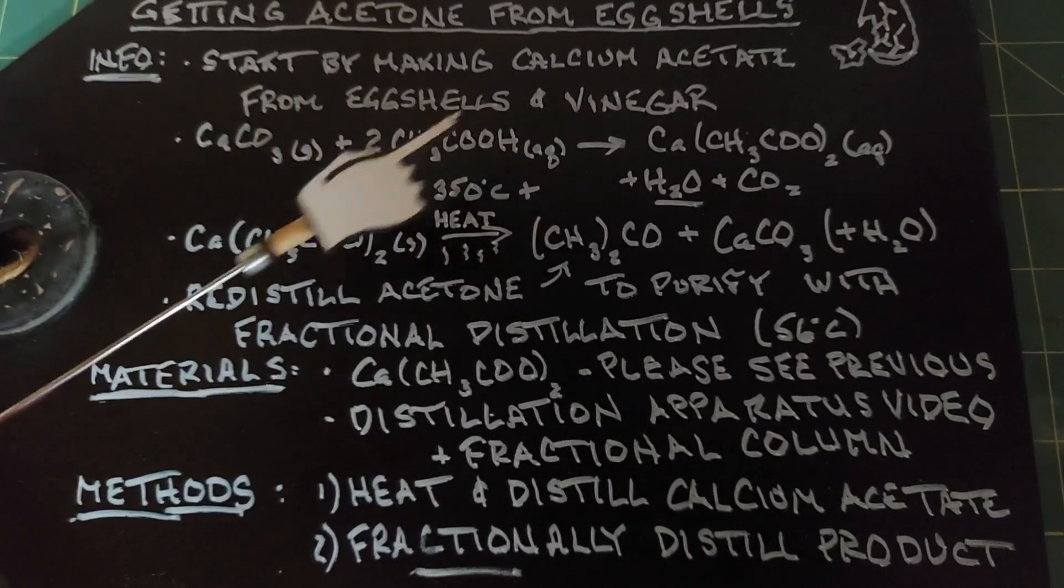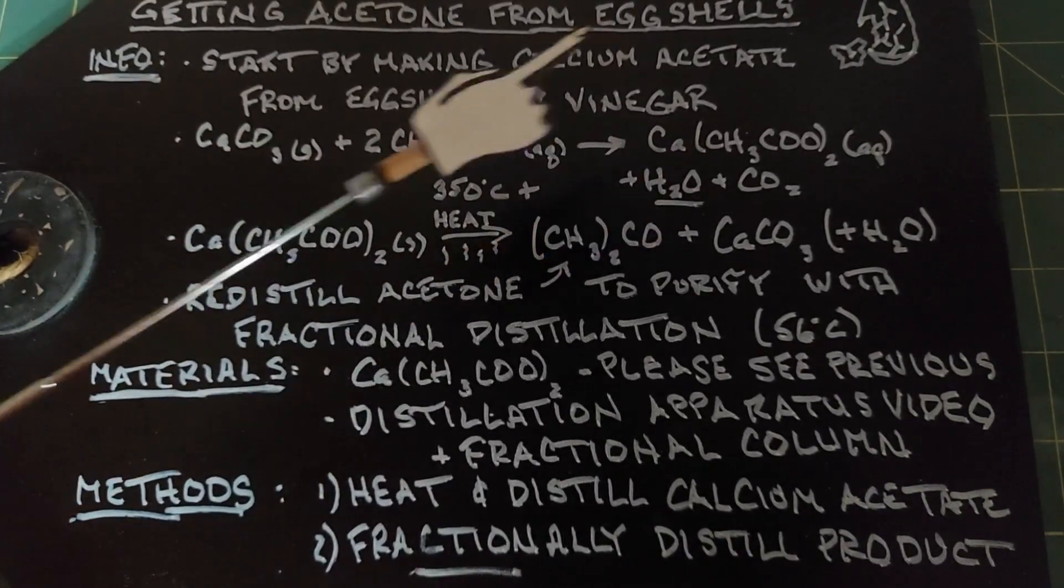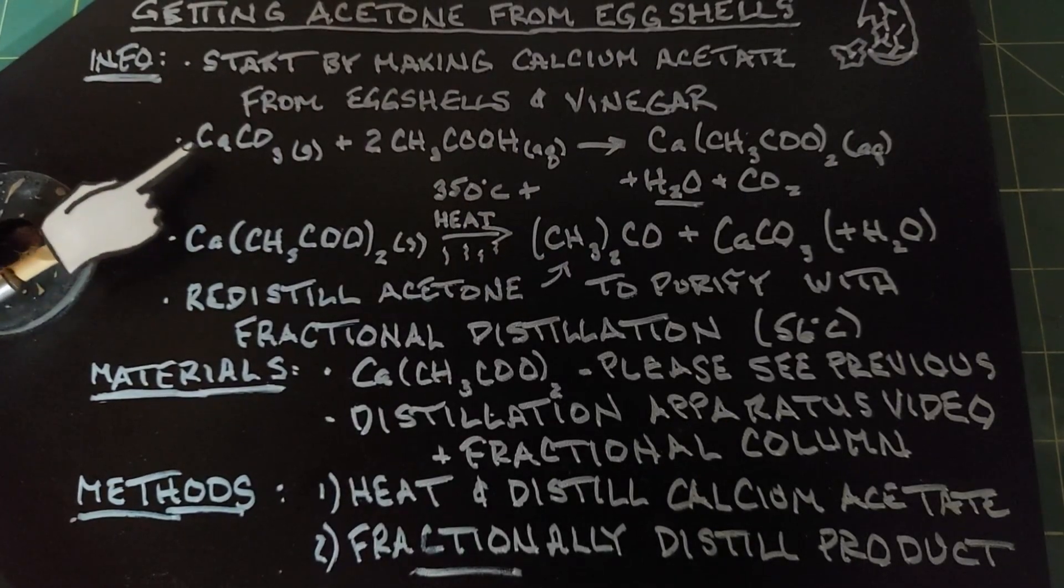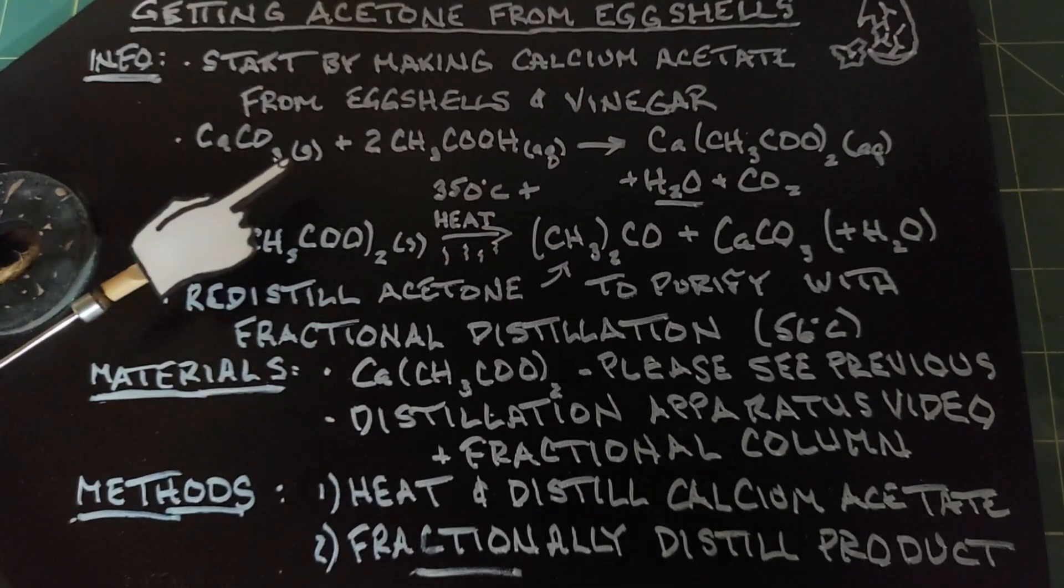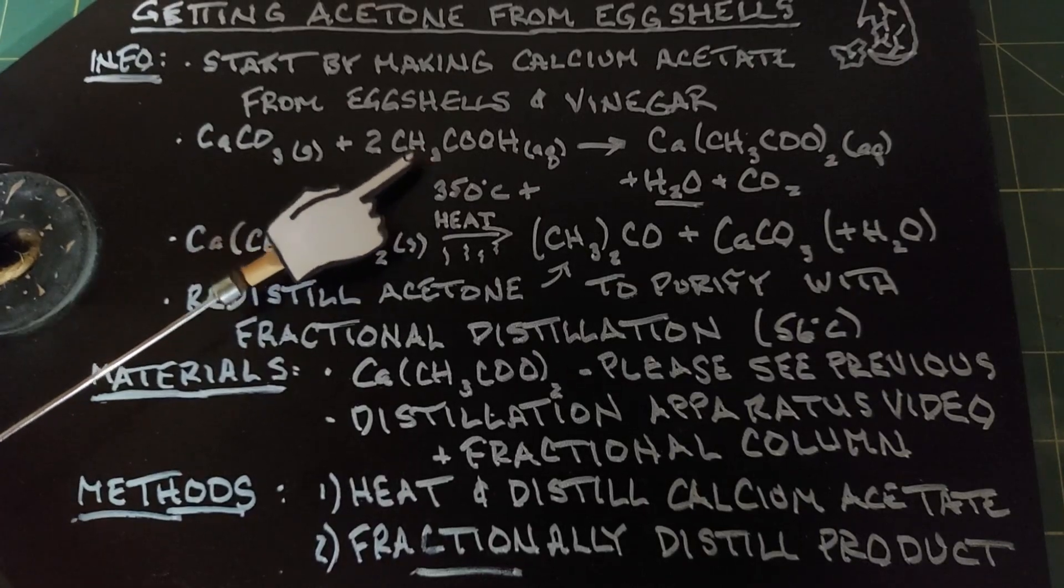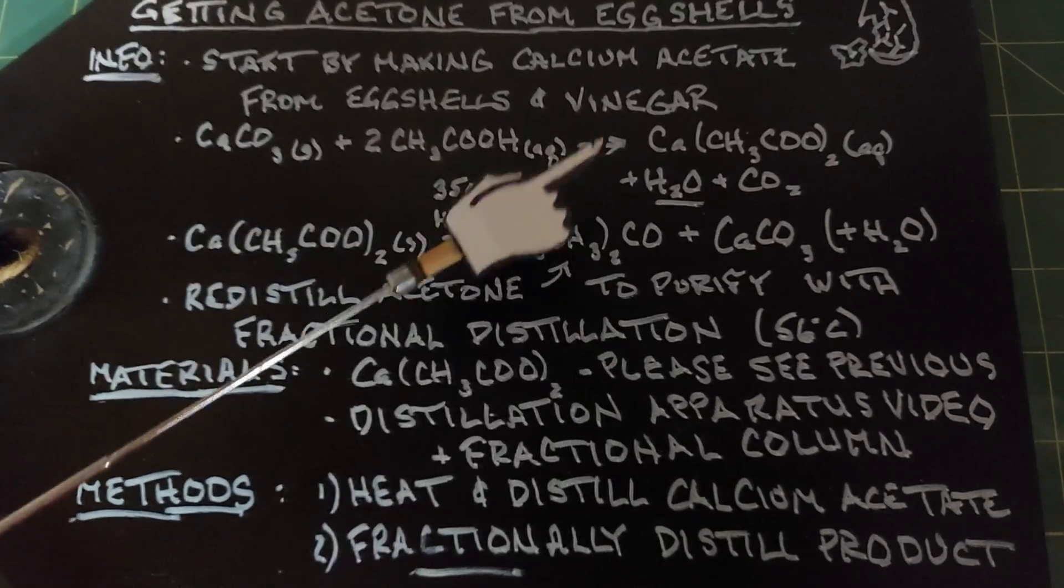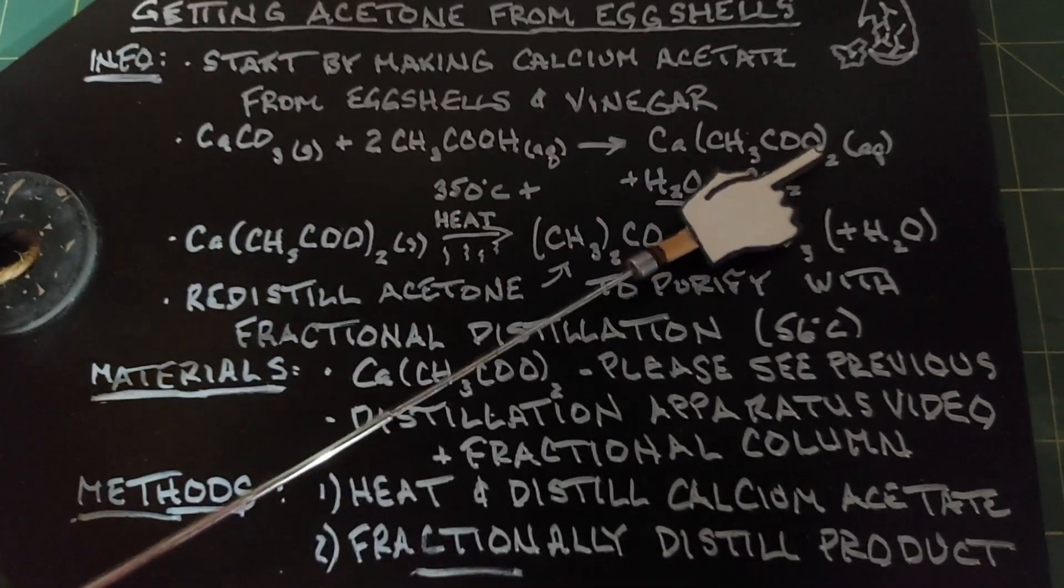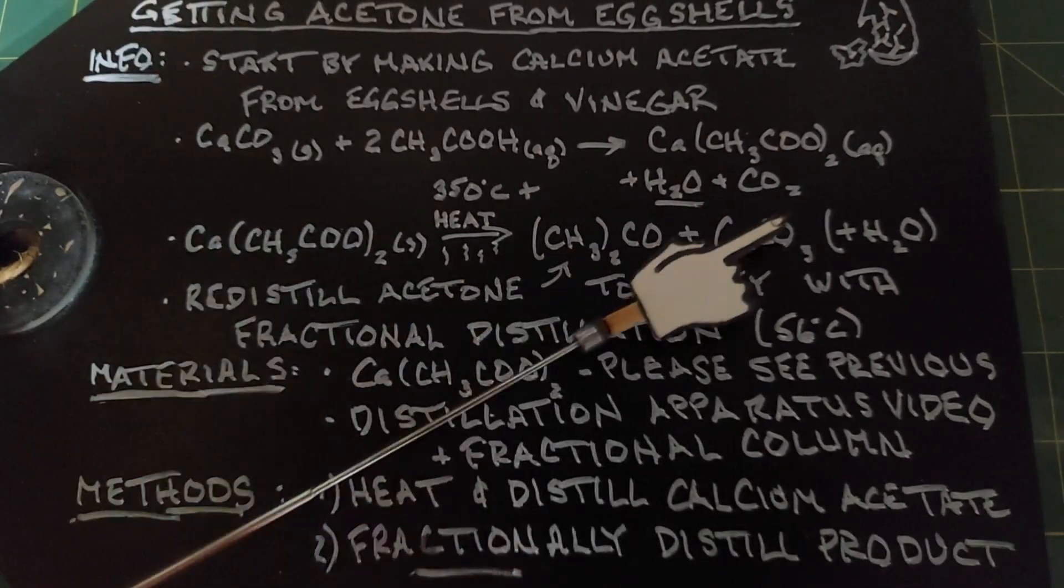You start by making that from eggshells and vinegar as I just mentioned and the reaction for that is the calcium carbonate, which is in the eggshells, is mixed with the vinegar or acetic acid here, which is what this is, will yield calcium acetate plus water plus carbon dioxide.